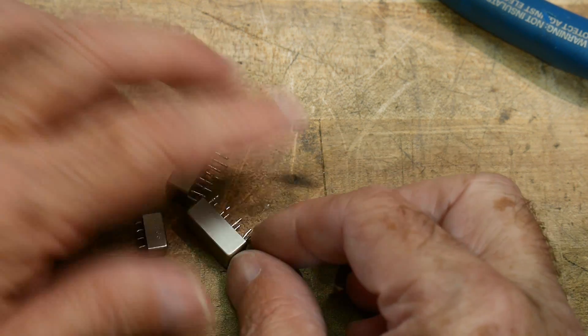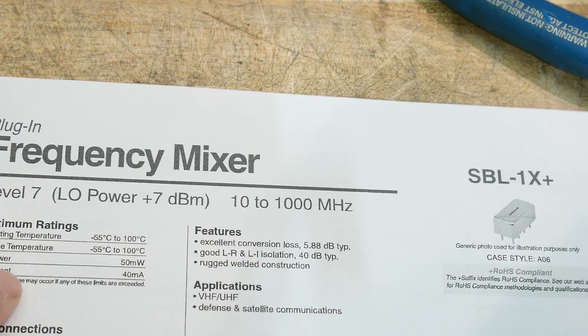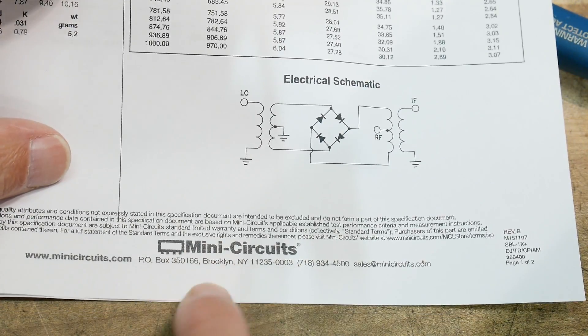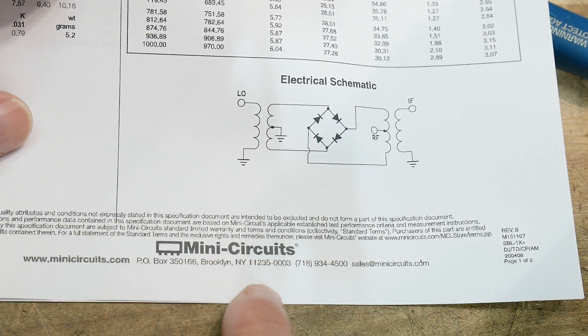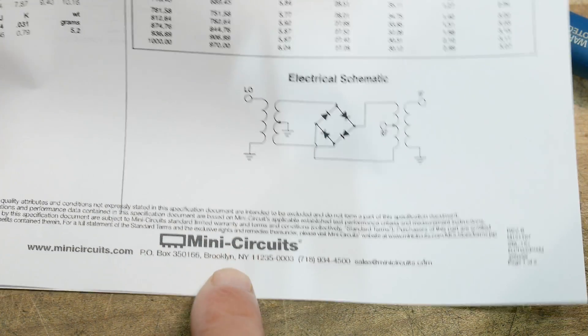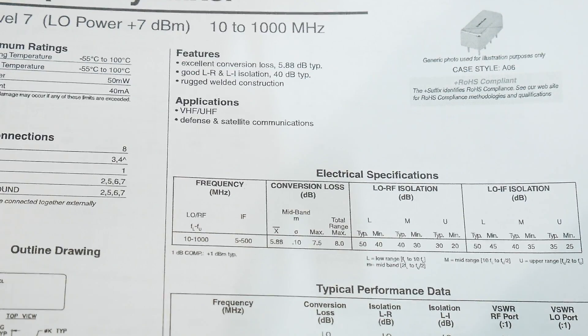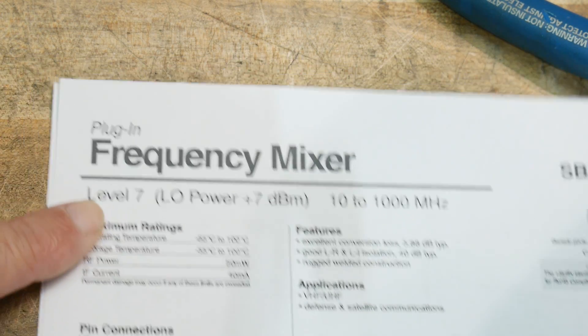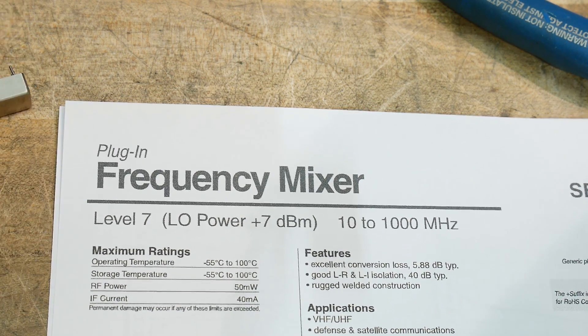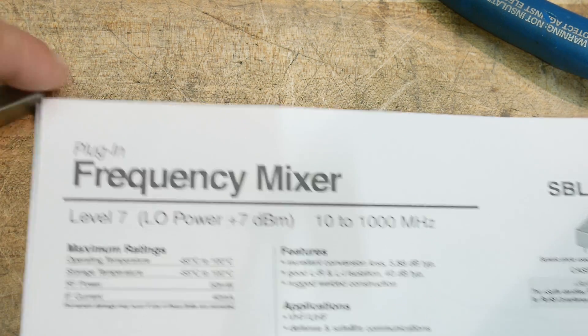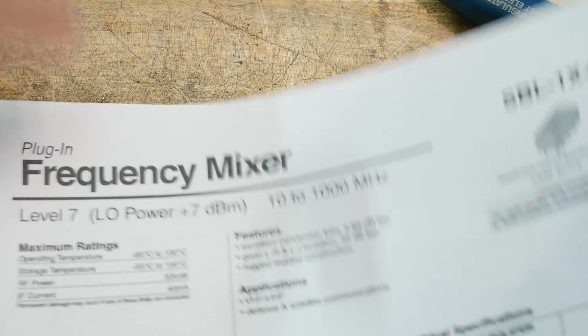Let's take a look at the datasheet for these things. They're built by a company called Mini Circuits. Mini Circuits has a lot of microwave and RF type stuff. It says plug-in, so I guess there's a socket for these or something. Anyway, you can plug them in. These were soldered in the board, so I don't know what they mean by plug-in.